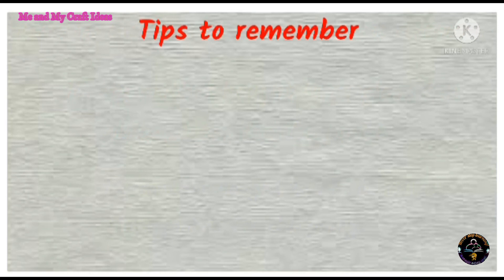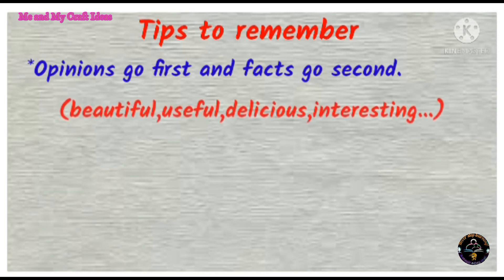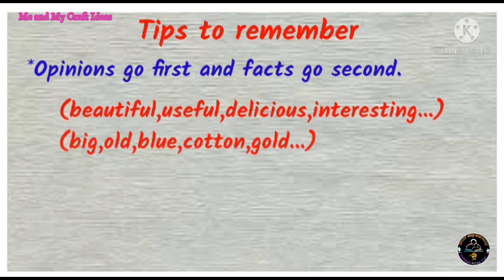Here are some tips to remember the adjective order when we speak. The first tip is: opinions go first, facts go second. Some adjectives for opinions are: beautiful, useful, delicious, interesting. Some adjectives for facts are: big, old, blue, cotton, gold. Opinions may differ from person to person, but facts do not change.